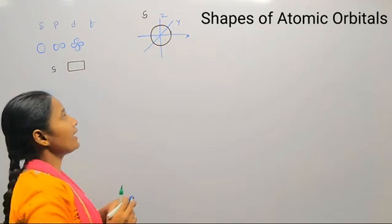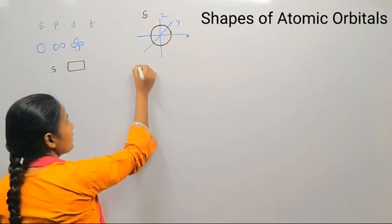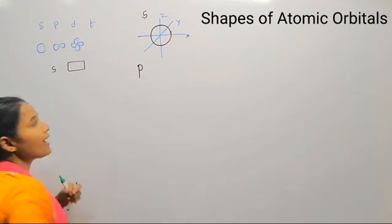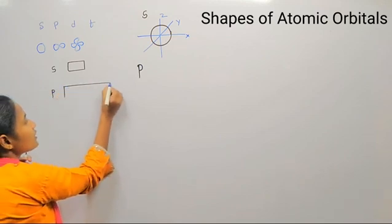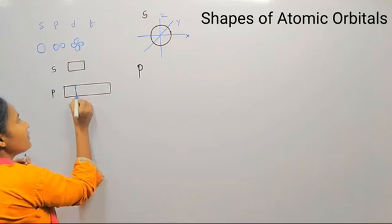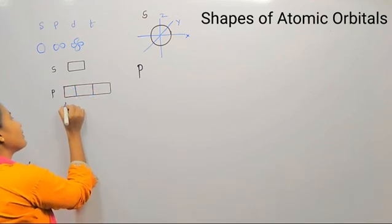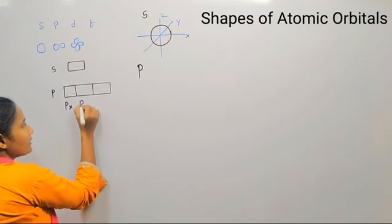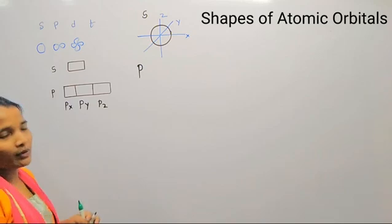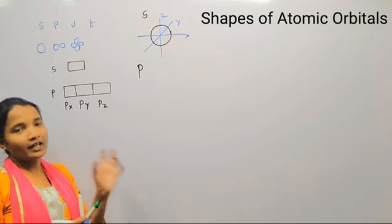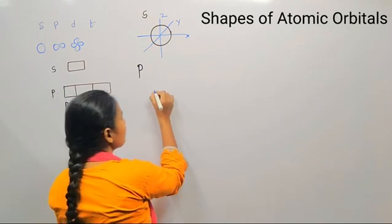The next orbital is the p orbital. The p orbital can be represented by three boxes, meaning it has three different types of orientations. Each orientation has its own name: one is the px orientation, the next is py, and the third is pz.